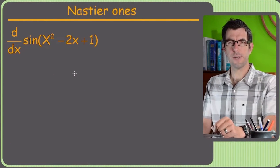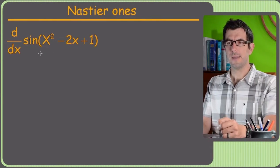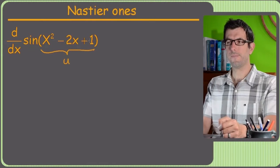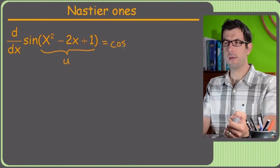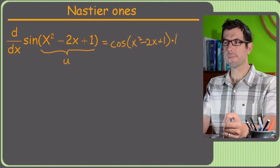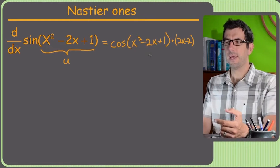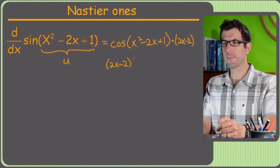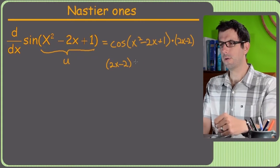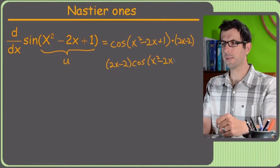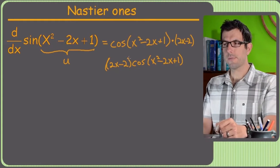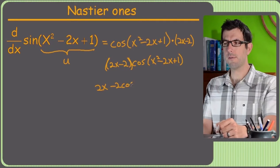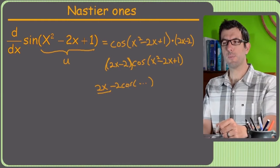Nastier one: derivative of sine of (x squared minus 2x plus 1). Chain rule isn't really affected by how complicated u is — that's still just your u. Derivative of sine is cosine of the same stuff: cosine of (x squared minus 2x plus 1), times u-prime, which is the derivative of (x squared minus 2x plus 1), giving 2x minus 2. Moving that out front: (2x minus 2) times cosine of (x squared minus 2x plus 1). We need parentheses because 2x minus 2 is all multiplied by cosine.